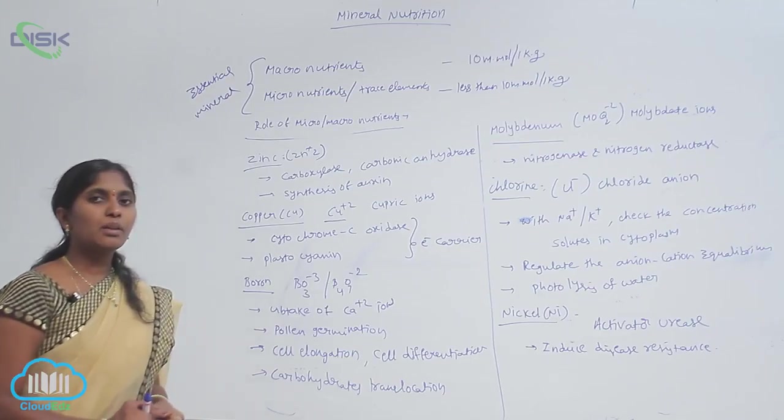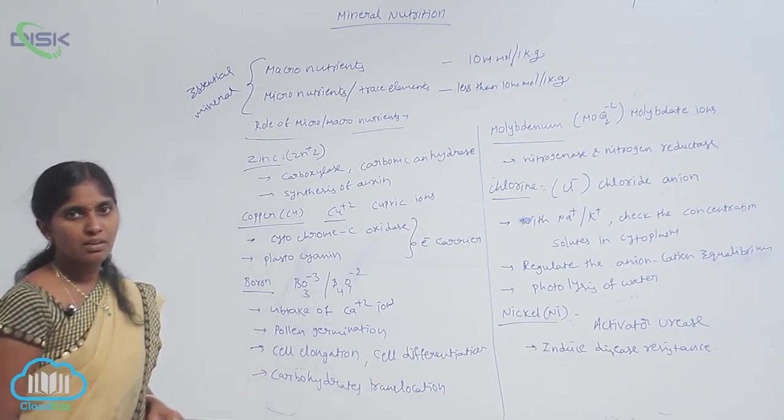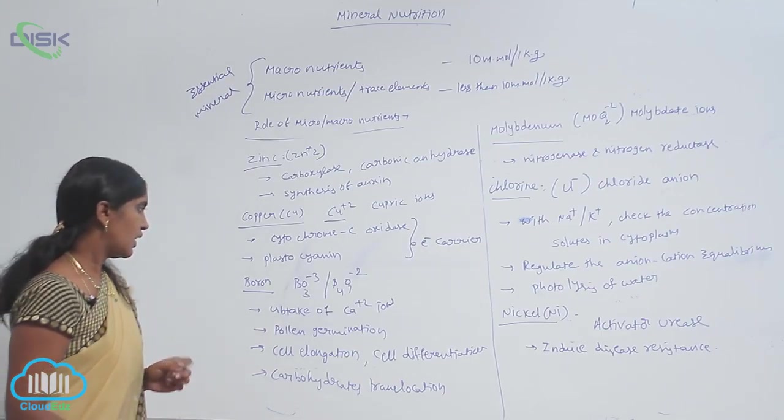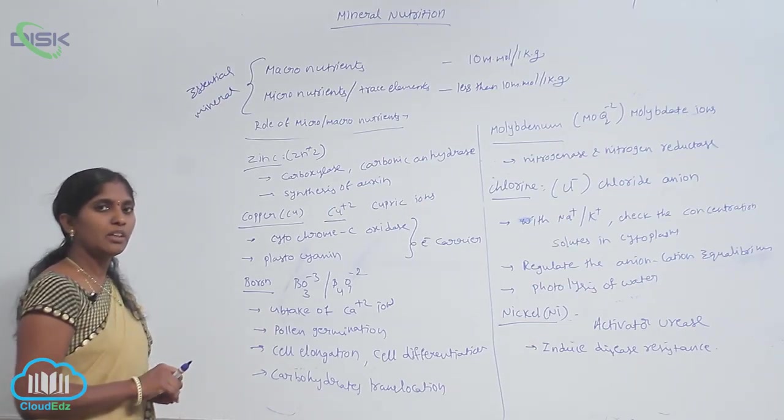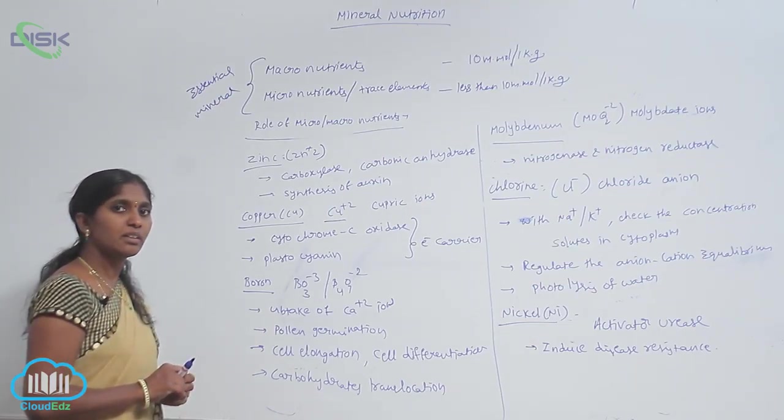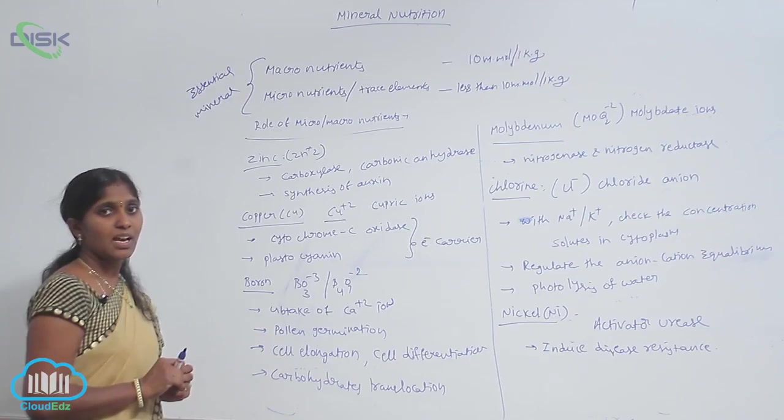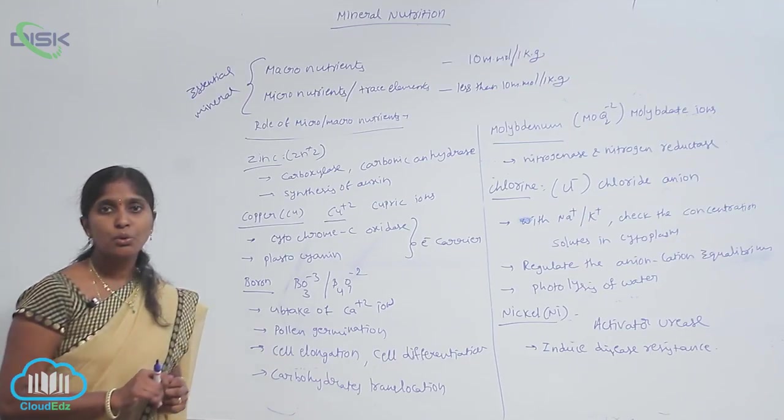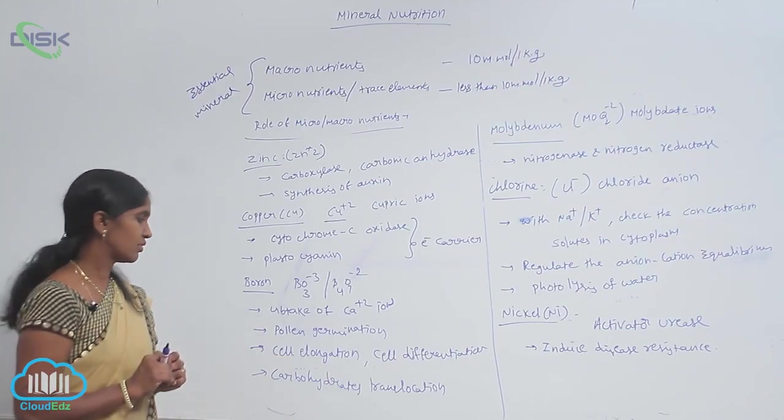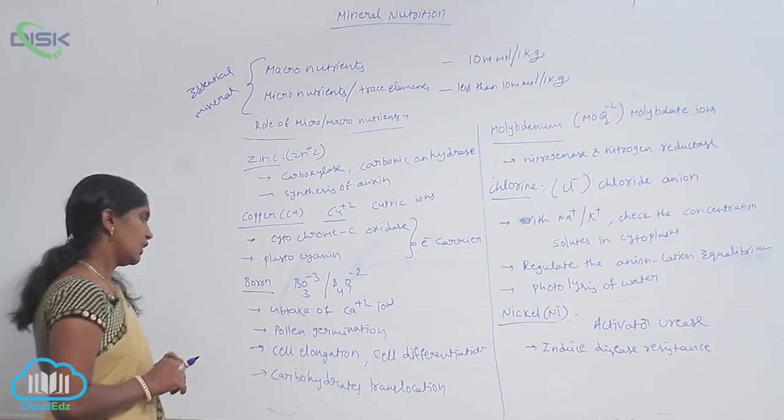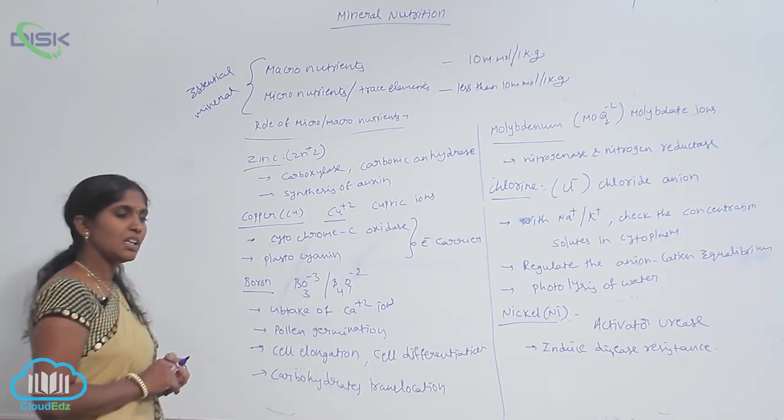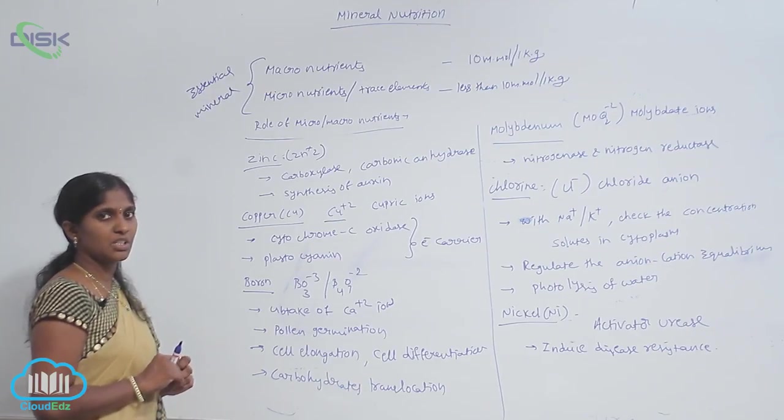It is involved in the uptake of calcium ions in the cell and in pollen grain germination as well as pollen tube elongation. And it mediates cell elongation as well as cell differentiation.